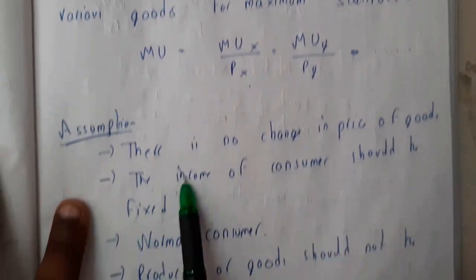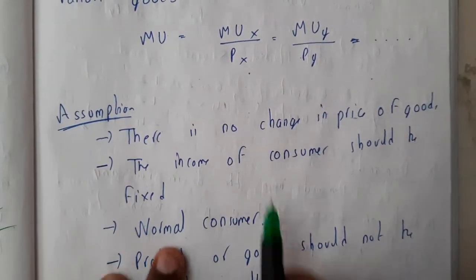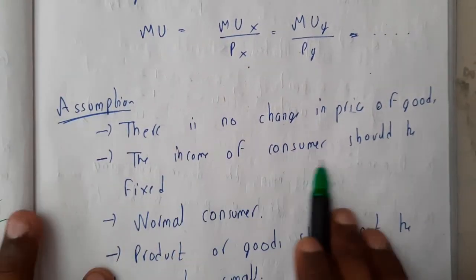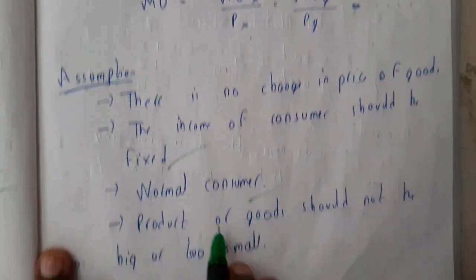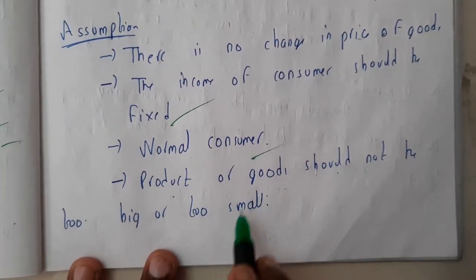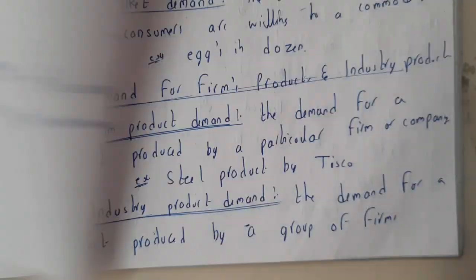Here we have some assumptions. There is no change in the price of goods. The income of the customer should be fixed. The customer should be a normal customer. The product or good should not be too big or too large.